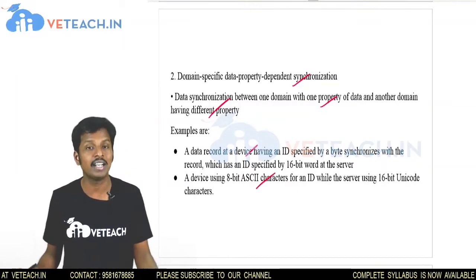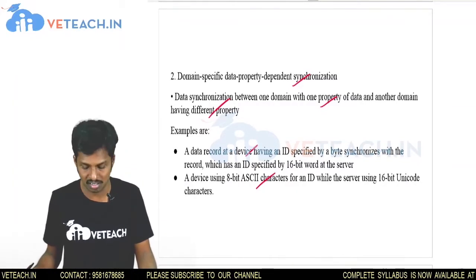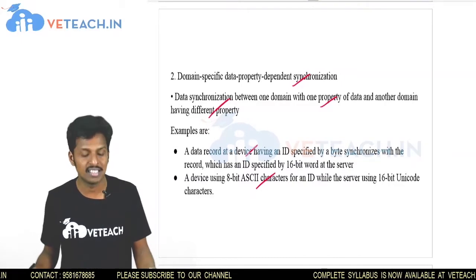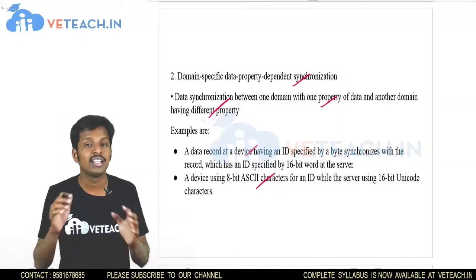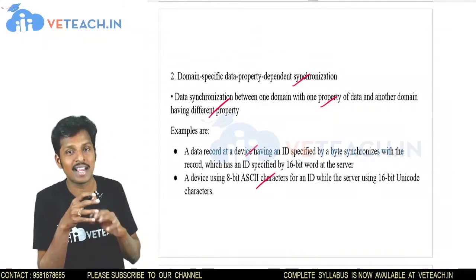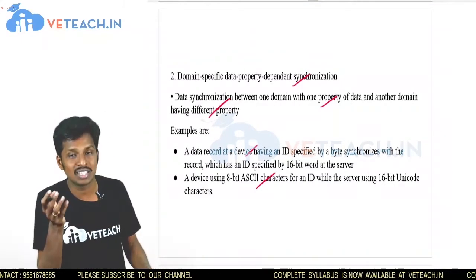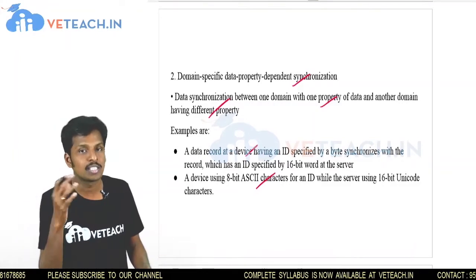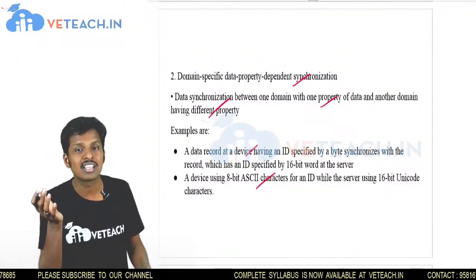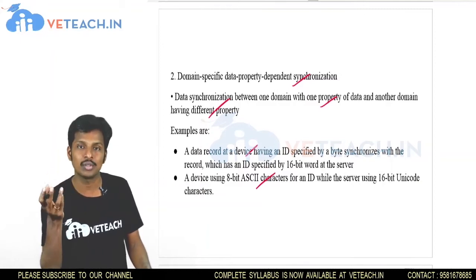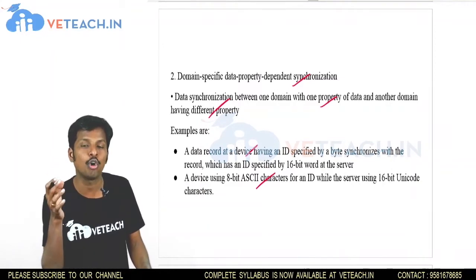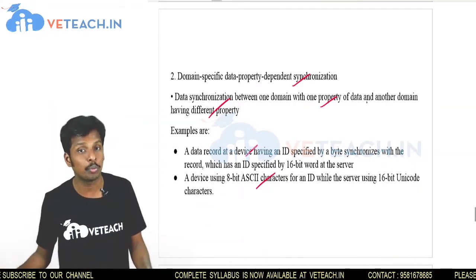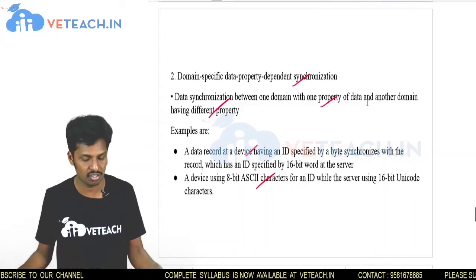Another example is 8-bit ASCII characters with an ID at 16-bit at the server. One side uses 8 bits and the other uses 16 bits, so both must be brought to a synchronized format — either the first one is adjusted to 8 bits or the second to 16 bits. The data property has been changed and must be reconciled.